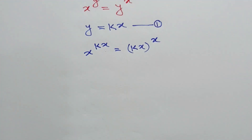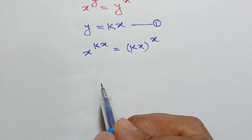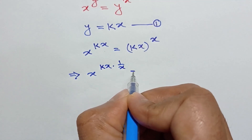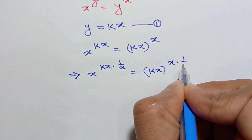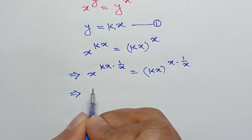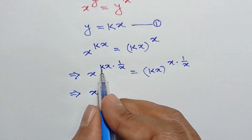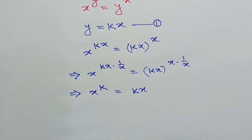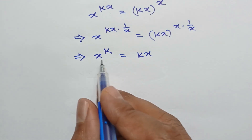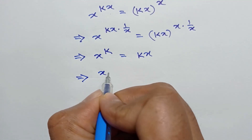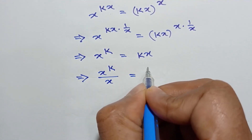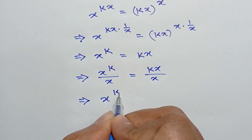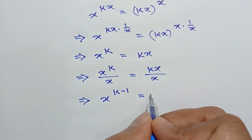As x is not equal to 0, raising both sides to the power 1 over x, we can write x to the power k is equal to kx. Now if we divide both sides by x, we will have x to the power k over x is equal to k, or x to the power k minus 1 is equal to k.